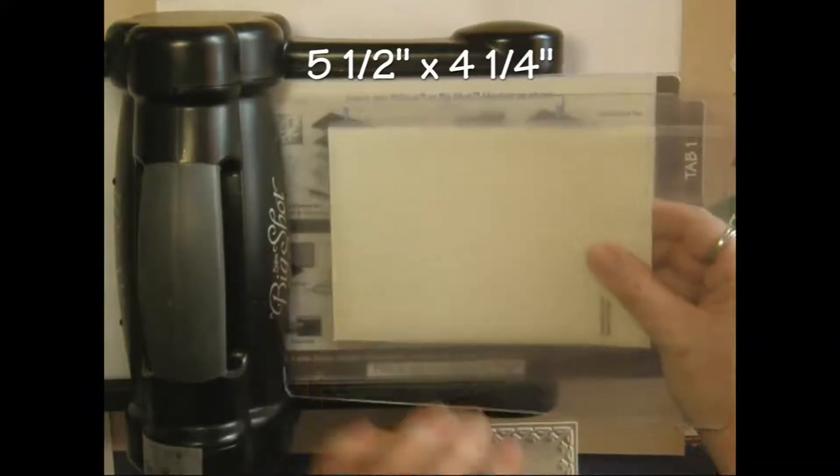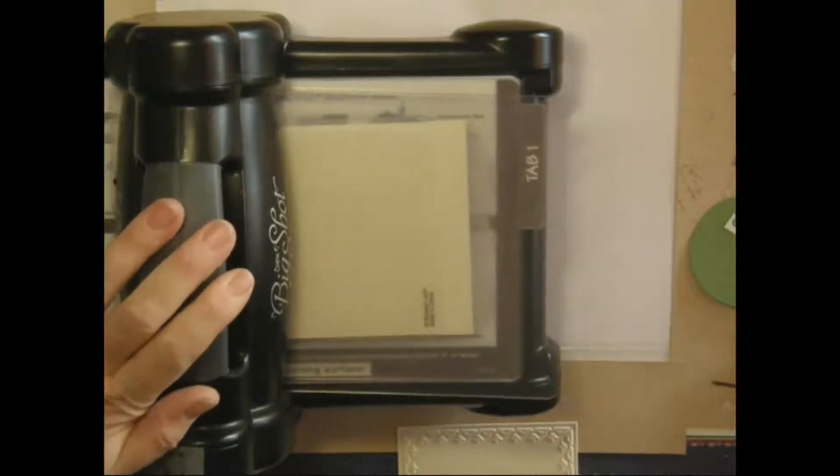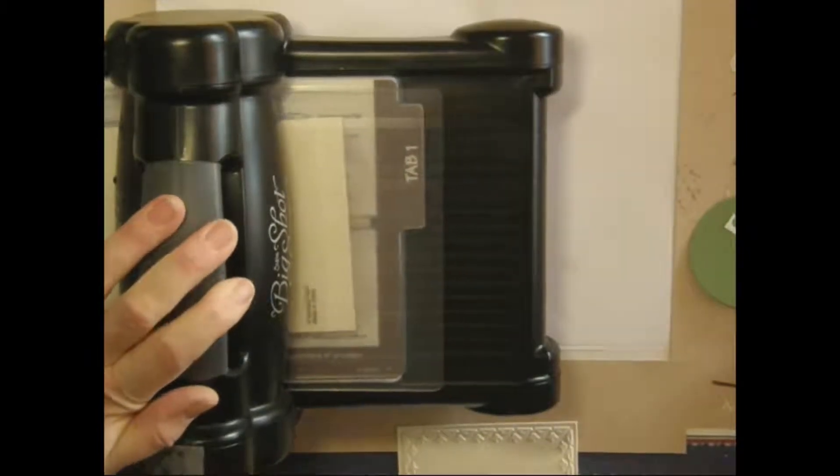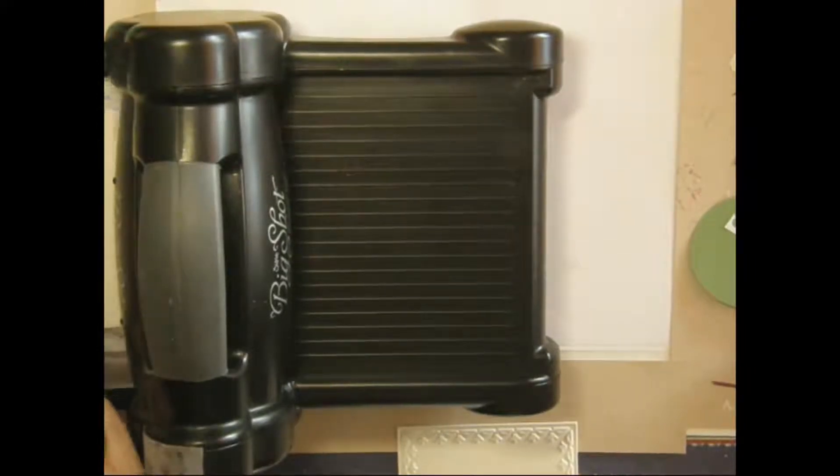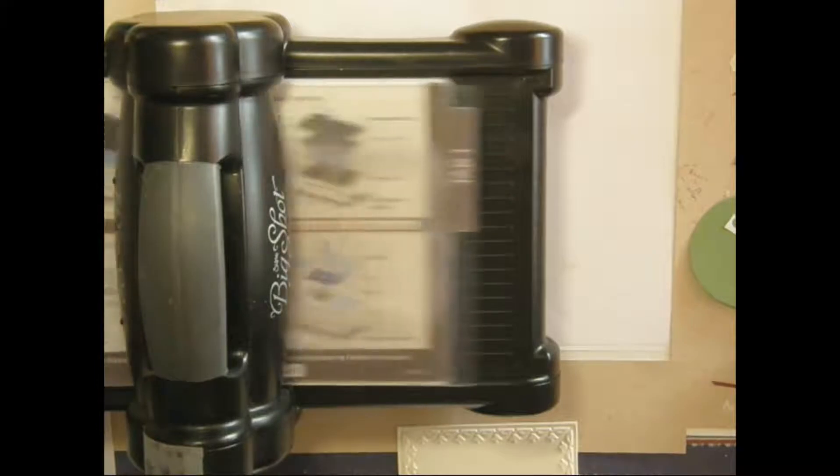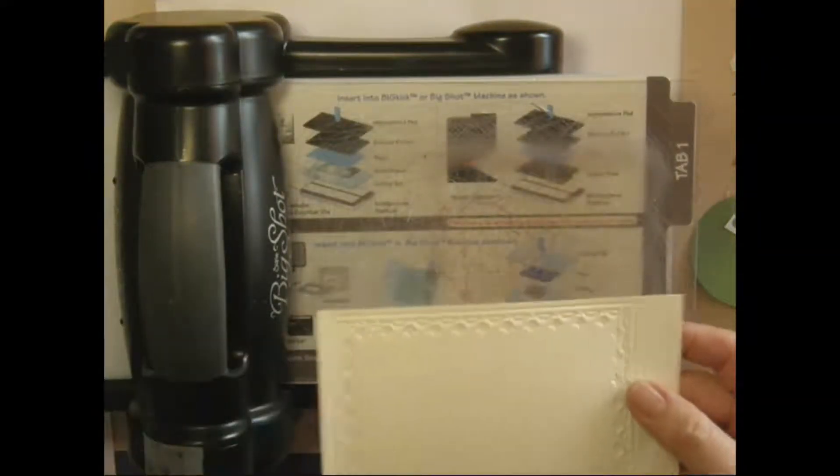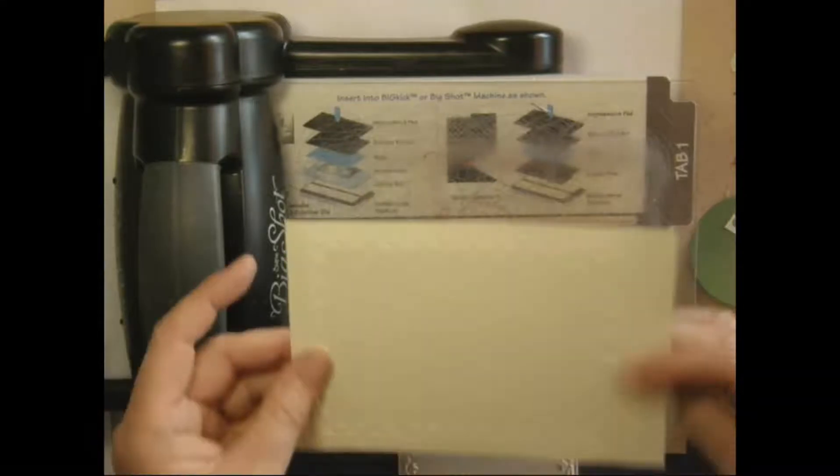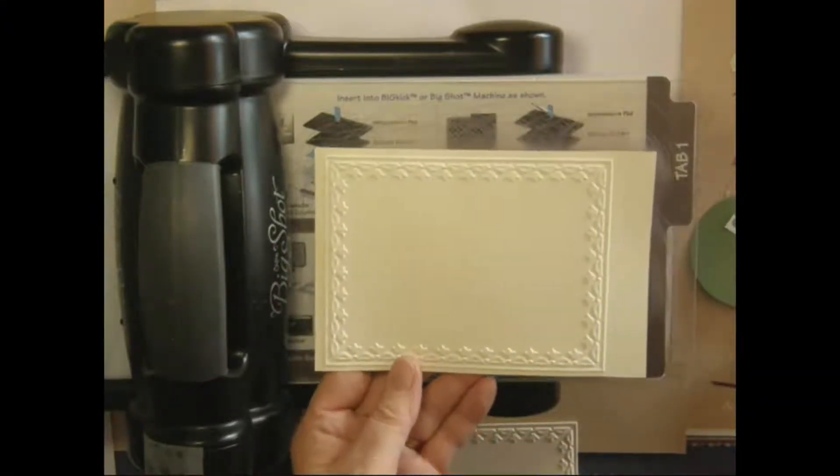And we run that through the Big Shot Machine. And we end up with an embossed piece of paper that looks like this. Now I want to take this and I want to make it smaller.